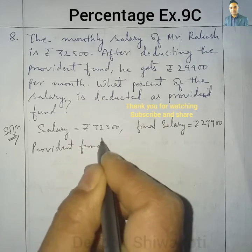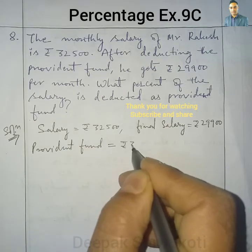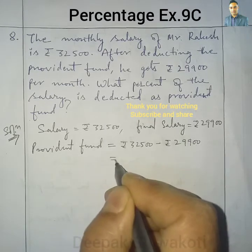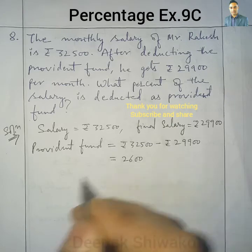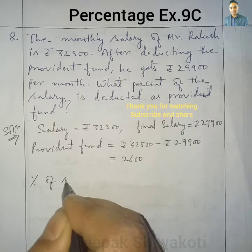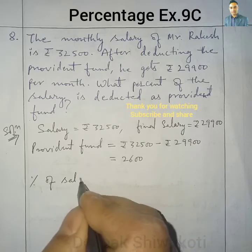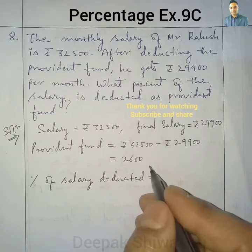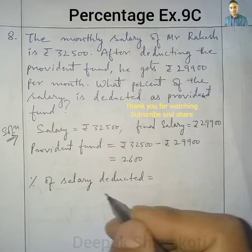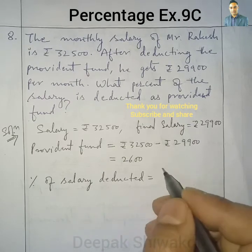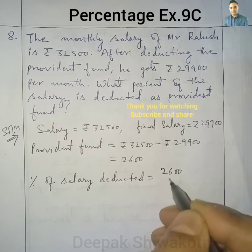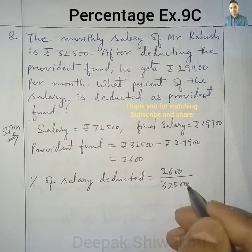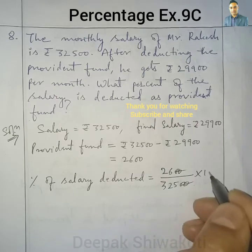The amount deducted as provident fund is rupees 32,500 minus rupees 29,900, which equals rupees 2,600. The percentage of salary deducted as provident fund is given by 2,600 divided by the original salary of 32,500, multiplied by 100%. Simplifying this by cancelling common factors gives us the answer.